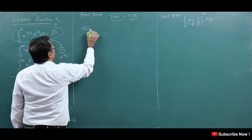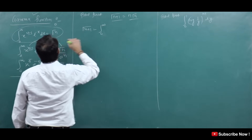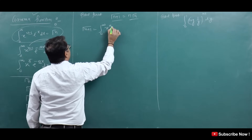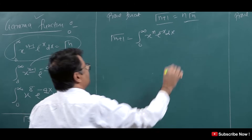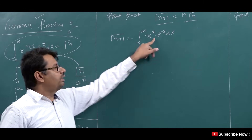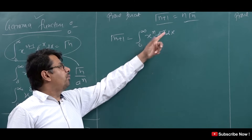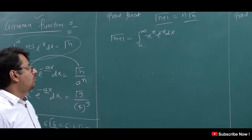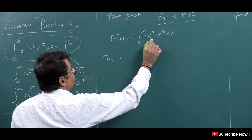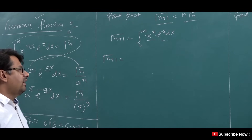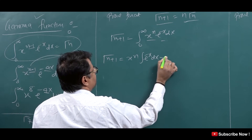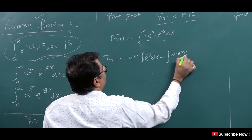So what is Gamma(n+1)? Gamma(n+1) = ∫₀^∞ x^n e^(-x) dx. Now we will prove that this equals n·Gamma(n). We will solve it with integration by parts. Let u = x^n and dv = e^(-x) dx.